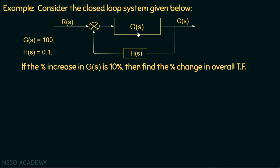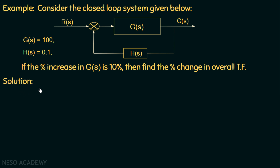The question is: if the percentage increase in G(s), that is in the forward path gain, is 10%, then find the percentage change in the overall transfer function. Here we can see that the input of the system is constant but one of the parameters is changing, and we are asked to find the percentage change in the overall transfer function. We will use the concept of sensitivity to solve this.